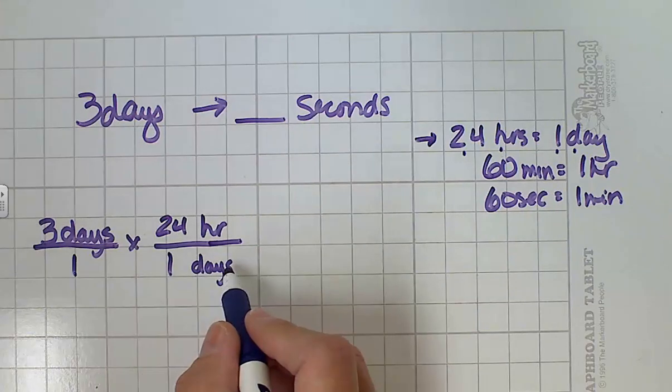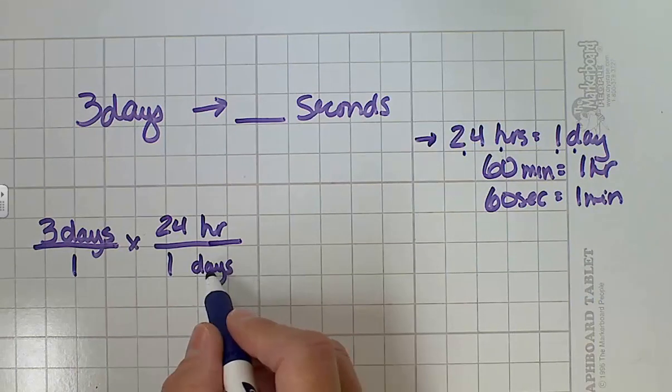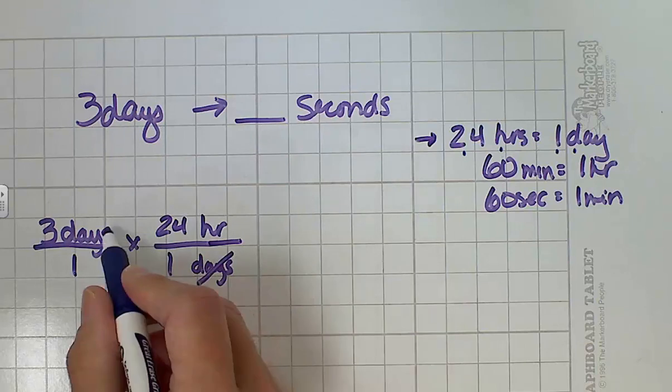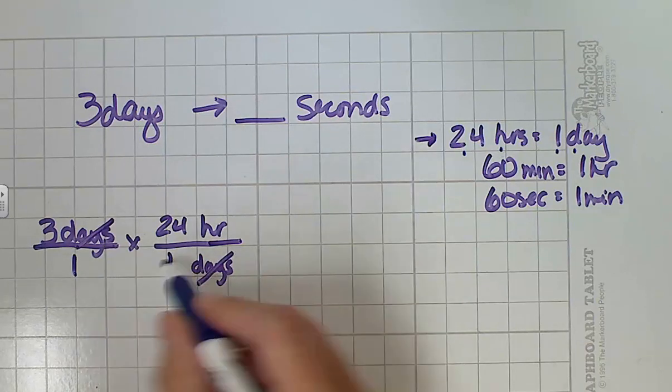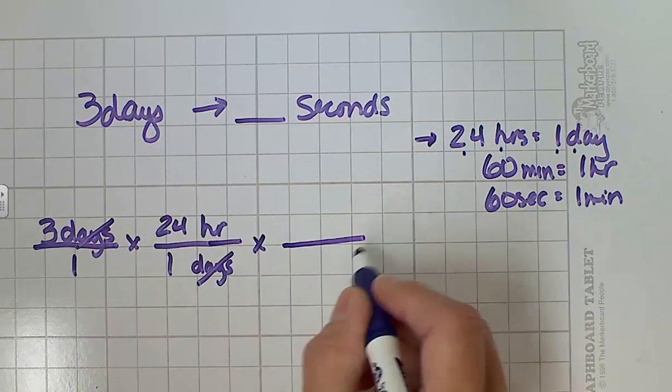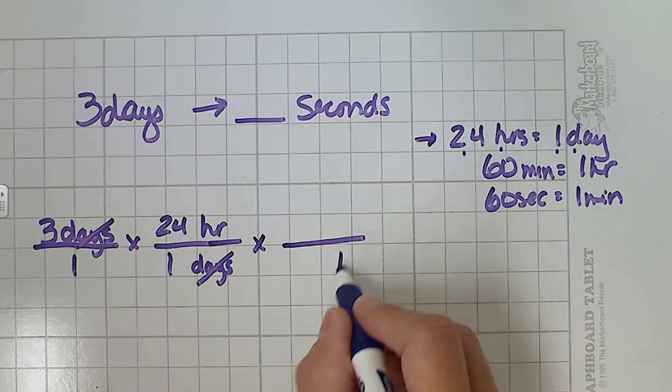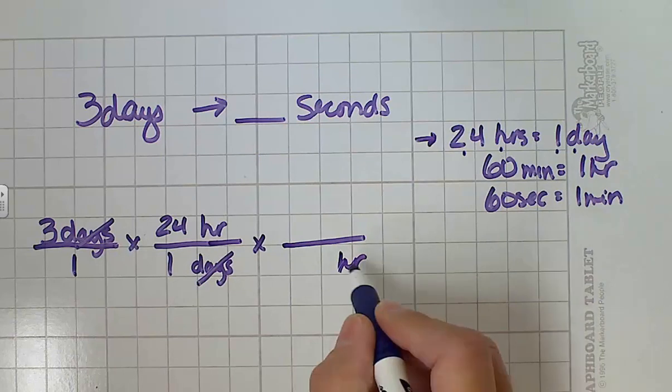You never have to think to yourself, do I divide here, do I multiply? You just need to make sure you line up your units and everything will be fine. Days in the denominator, days in the numerator, and now I'm left with hours. But my question was seconds. So again, now I have hours in the numerator. To convert it or to get rid of it, I want hours in the denominator.